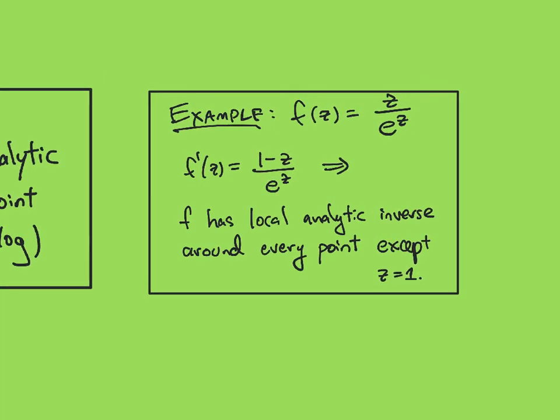Here's just another example. If I have f of z is z over e to the z, then the derivative of this turns out to be 1 minus z over e to the z. And so f has a local analytic inverse around every point except possibly z equals 1.